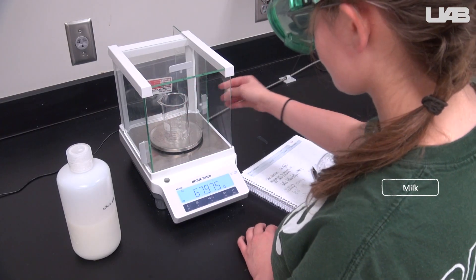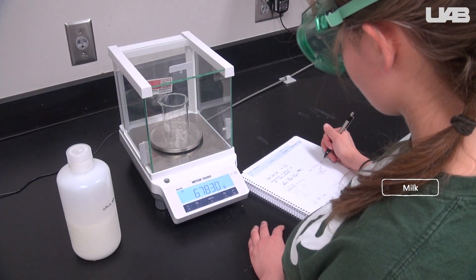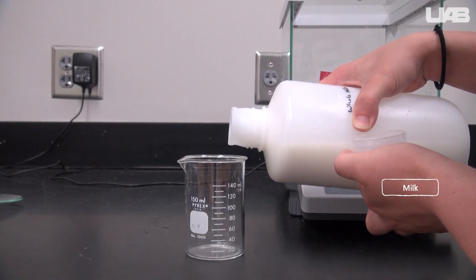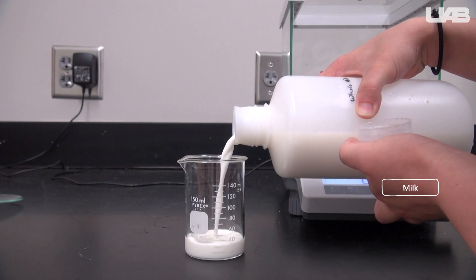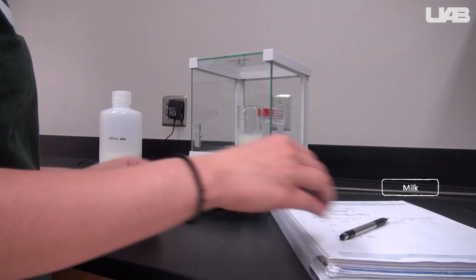So first we need to actually get our milk. Determine the mass of the empty beaker and record it in your notebook. Take the beaker off of the balance and pour in about 50 milliliters of milk into the beaker and record the mass of both. It should be about 50 grams.